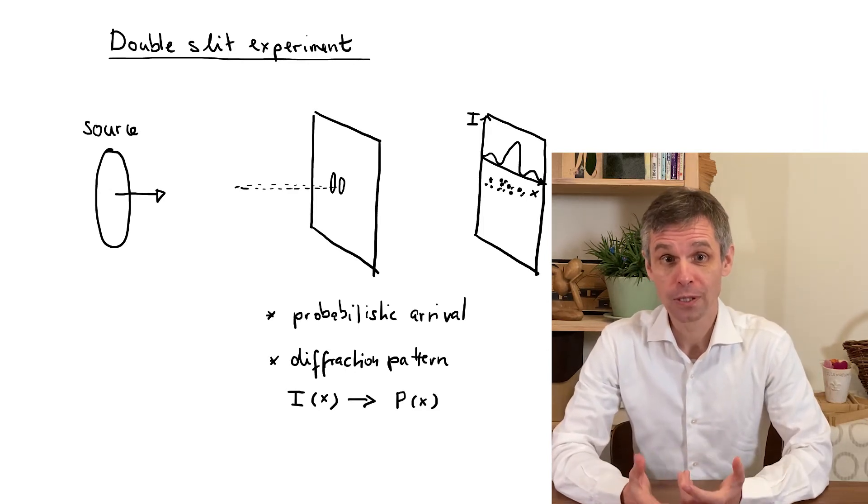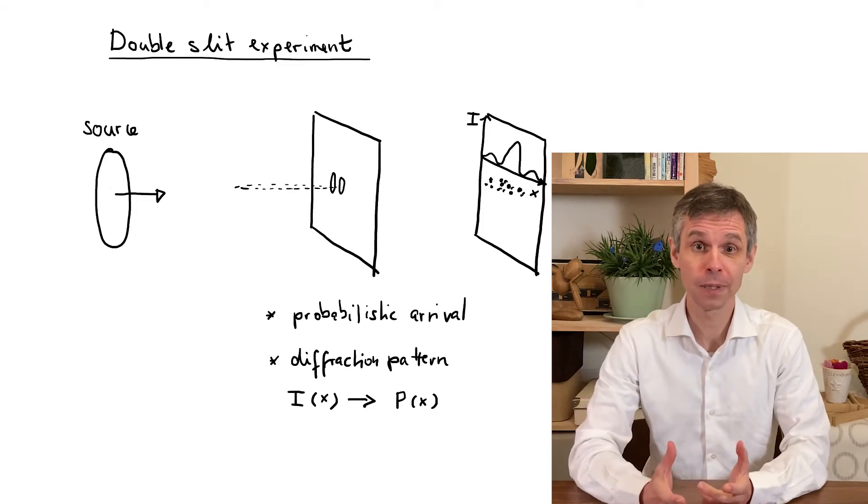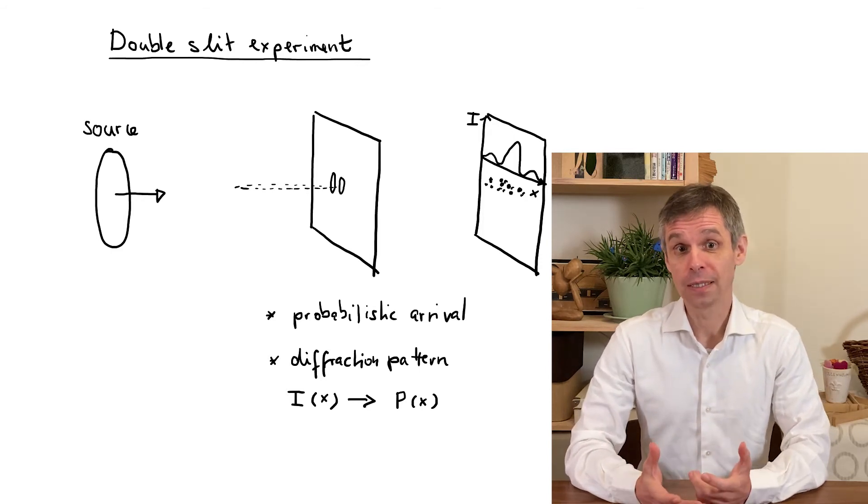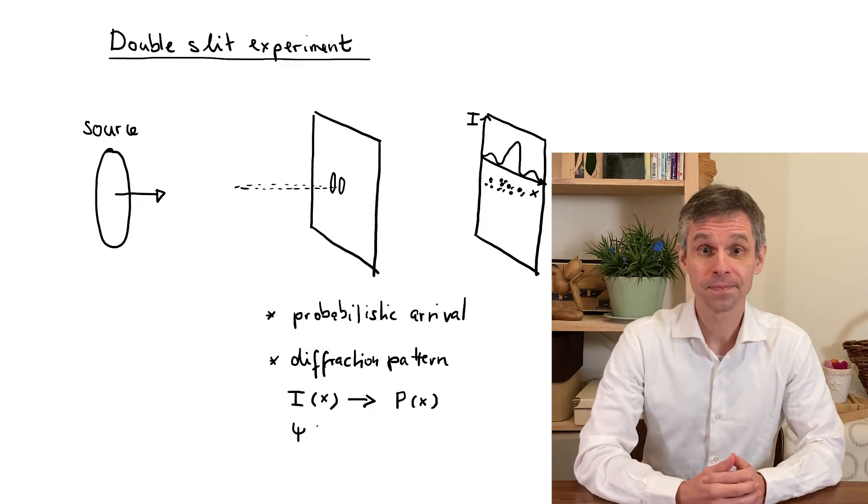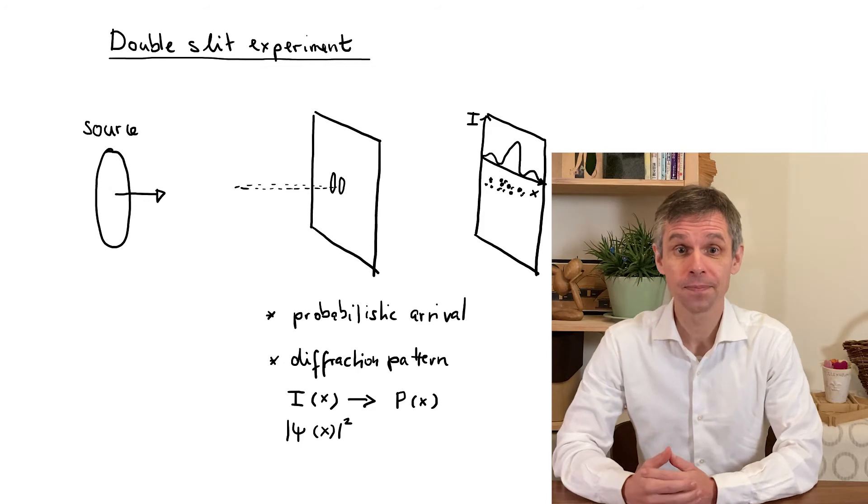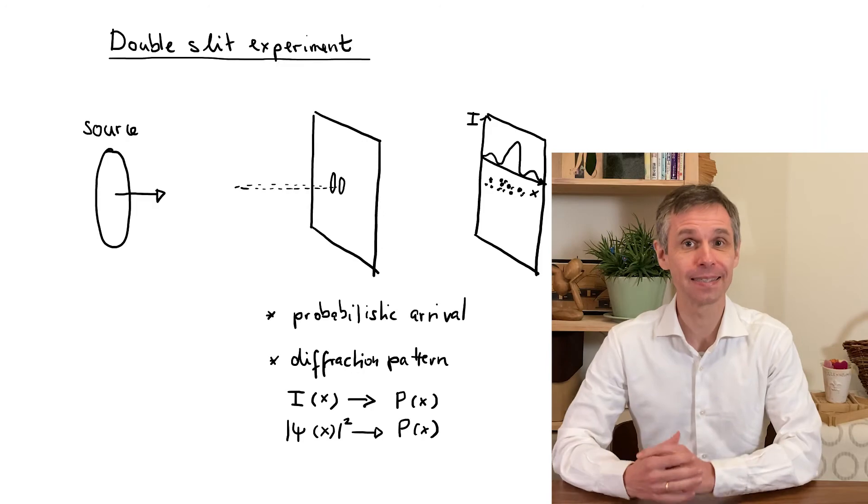Now if we want to determine the intensity of a wave, then we usually start with the amplitude of the wave and basically take the absolute value squared. The amplitude in quantum mechanics will be denoted generally as the symbol ψ (psi). So therefore, the intensity of this wave would be |ψ|², but instead of interpreting it as an intensity, we should interpret it as a probability density.